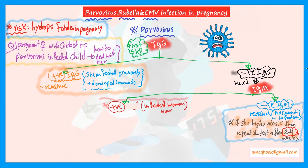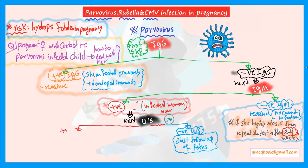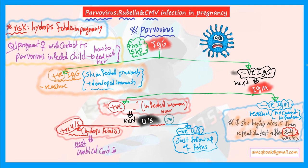The next step is to check the condition of the fetus — whether a complication has developed or not. So we perform an ultrasound. If the ultrasound is negative, the child is not yet infected and the complication has not developed, so just follow up. If the ultrasound is positive — meaning the child has developed hydrops fetalis — the next step is umbilical cord sampling to check the degree of severity.